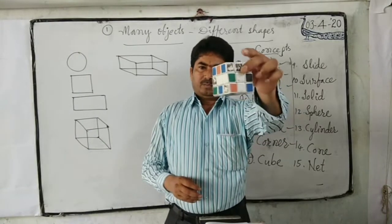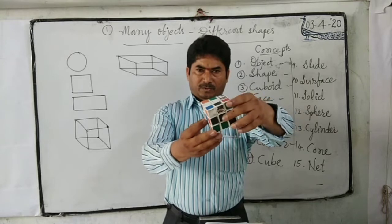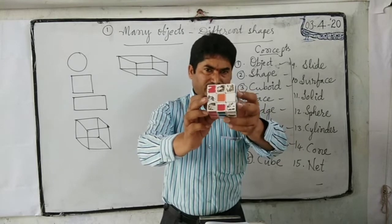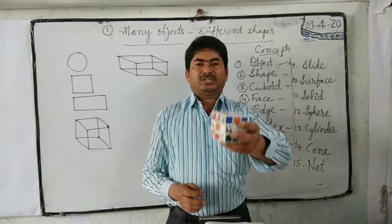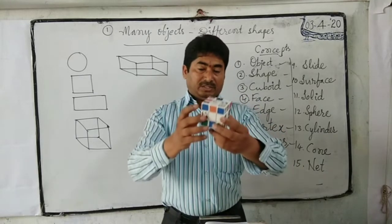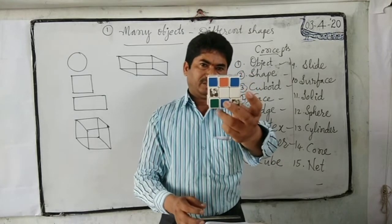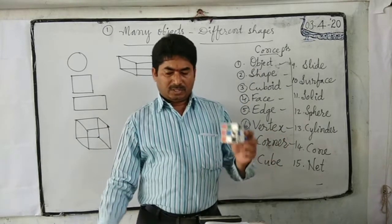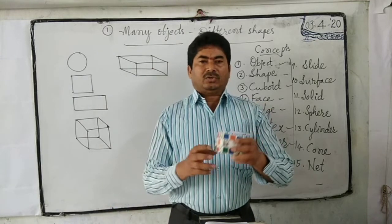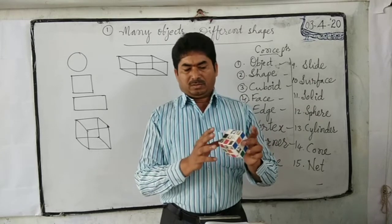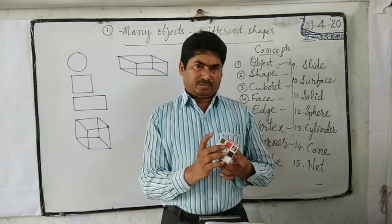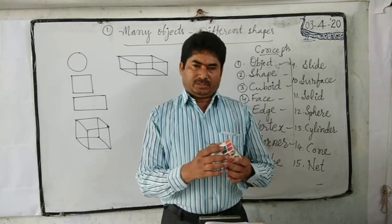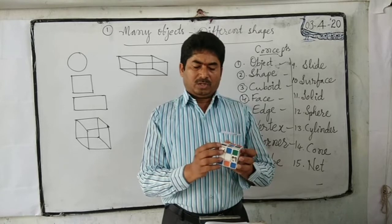What is a cube? A solid object which has six equal square faces is called a cube. Like a cuboid, a cube also has six faces, but all are equal square faces. It has eight vertices and twelve edges, all of equal length.